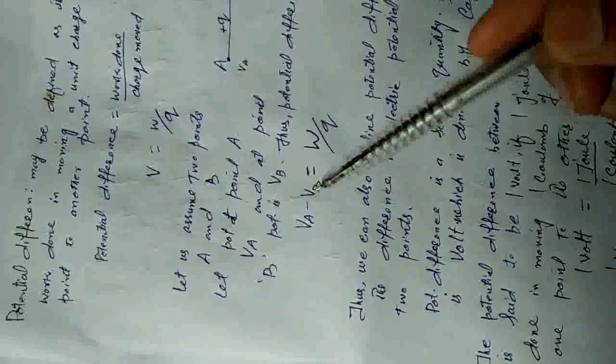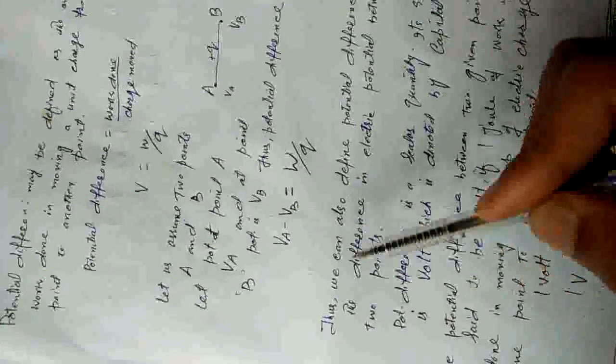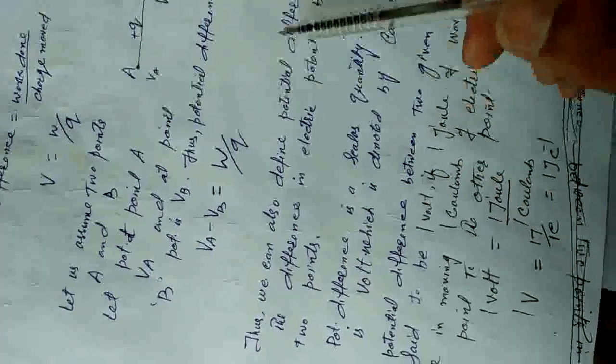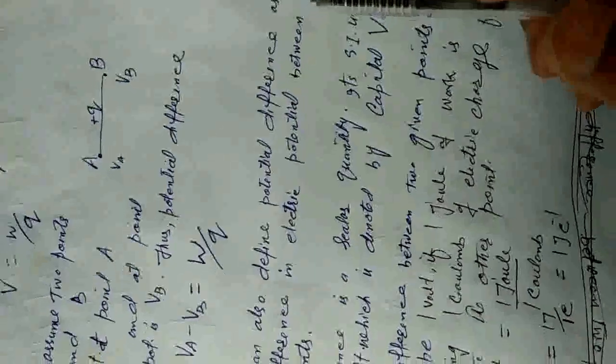Thus we can also define potential difference as the difference in electric potential between two points. Point A पर जो potential है और point B पर जो potential है, उनमें जो difference है, उसको potential difference बोलते हैं। Potential difference is also a scalar quantity.